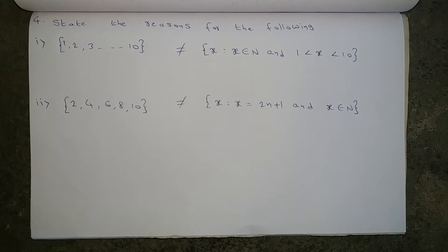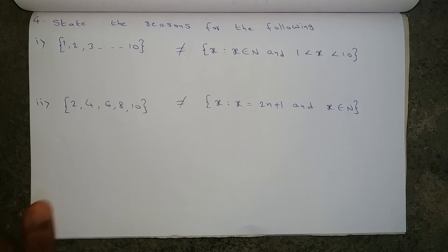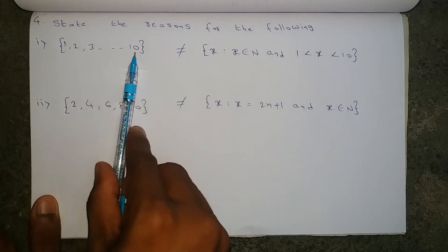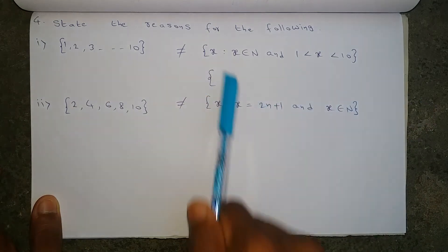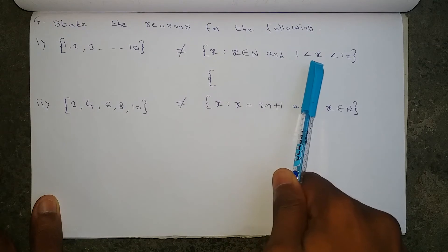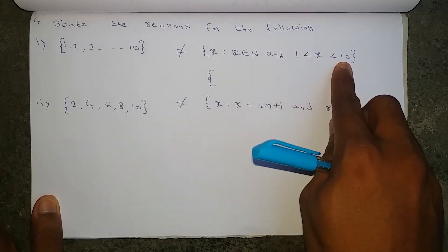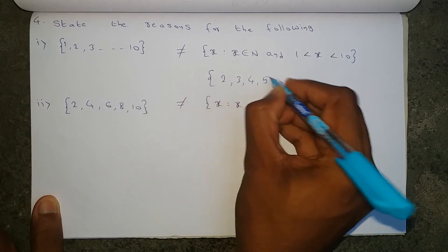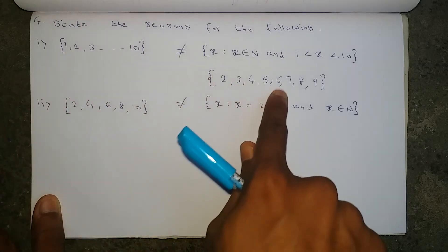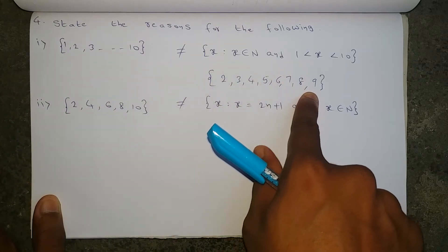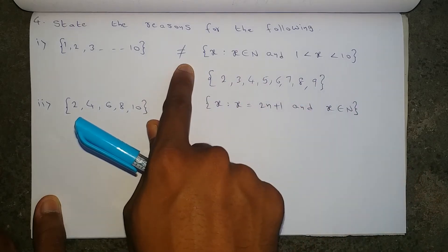State the reasons for the following. The first set is {1, 2, 3, 4, ..., 10} and the second set is X such that X belongs to natural numbers and 1 < X < 10. Since the strict less-than symbol is used, 1 and 10 should not be included. So the second set becomes {2, 3, 4, 5, 6, 7, 8, 9}. In the first set, elements 1 and 10 are included, whereas in the second set, 1 and 10 are excluded. That is why both sets are not equal.